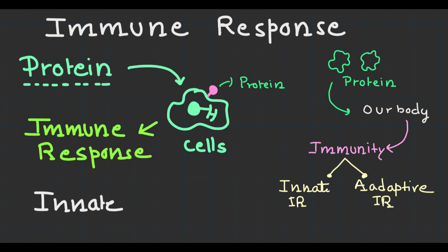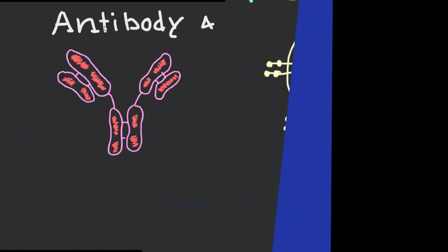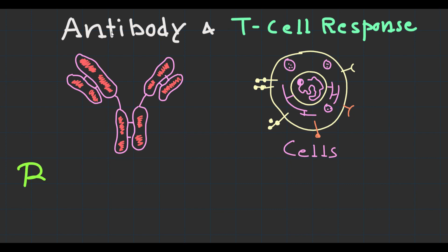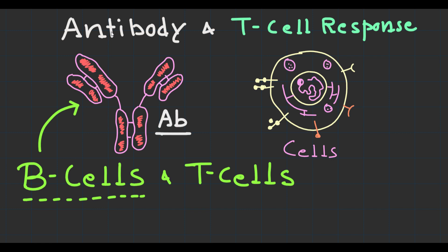Next is antibody production and the T-cell response. The adaptive immune response, which is primarily mediated by B cells and T-cells, is crucial in combating the infection. B cells produce antibodies that can bind to the viral proteins, neutralizing the pathogen. On the other hand, T-cells recognize and eliminate infected cells, further aiding in the immune response.